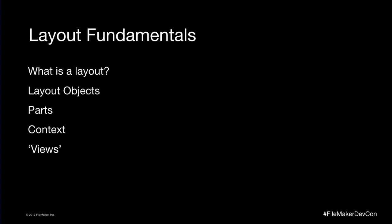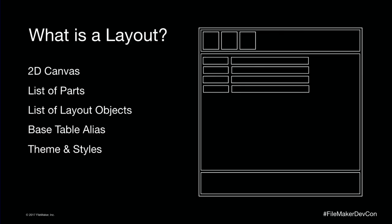Views are something you need to understand if you want to make a performant solution. At its most simple, a layout is just a two-dimensional space. In FileMaker, the height of the layout is determined by the total height of all the parts, and the width is set by you with the explicit layout width. That didn't always used to be the case. Before FileMaker 12, we actually defined the width based on the rightmost edge of the rightmost object.